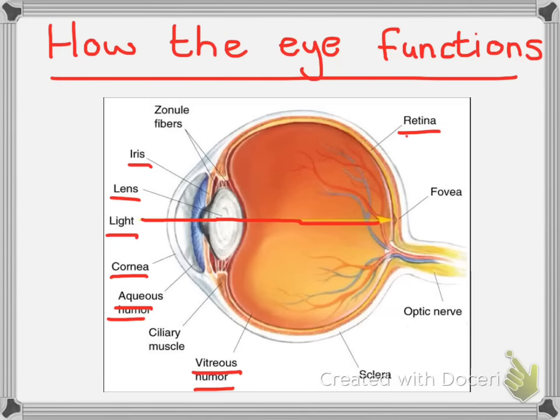And the retina is where we have all of our photoreceptors. Photoreceptors are the rods and cones that we have in our eyes, which enable us to see and give us vision. Now if the retina is where the image is being projected onto, where we are going to receive the information,